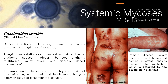For clinical manifestations, Coccidioides includes asymptomatic pulmonary disease and allergic manifestations such as toxic erythema, erythema nodosum, and erythema multiforme. With systemic dissemination, it can cause arthritis. The primary disease usually resolves without therapy and confers a strong specific immunity to reinfection, which is detected by the coccidioidin skin test.